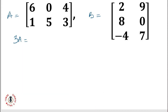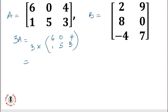The first question says we have to find 3A. To find 3A simply means we are multiplying 3 times the matrix A, which is: 6, 1, 0, 4, 5, and 3. We'll take each of the elements of this matrix and multiply it by 3.